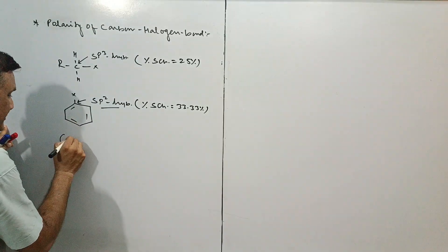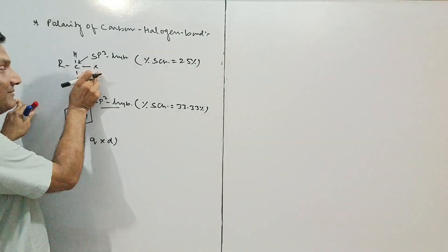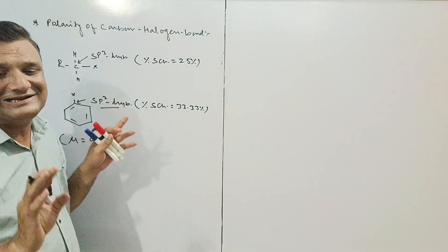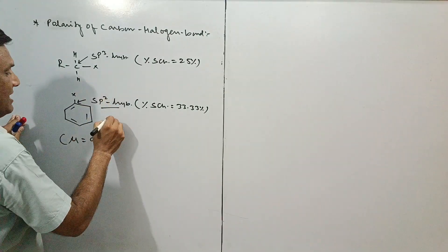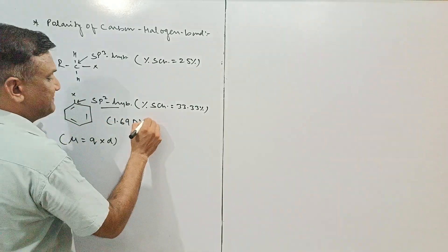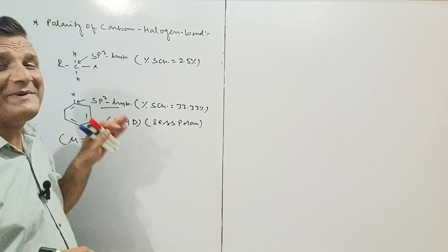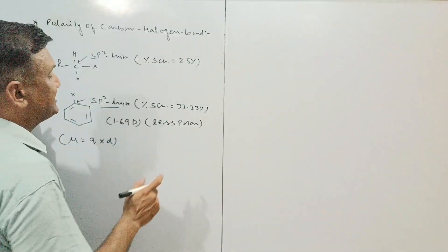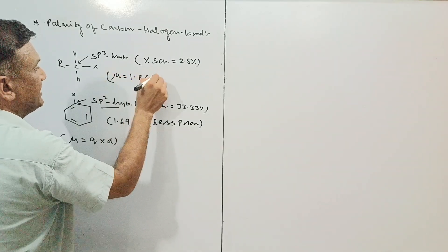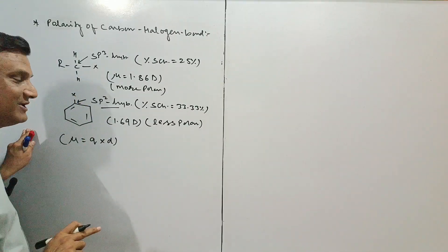Dipole moment ki value: mu = q × d. Yahan sp3 carbon ki electronegativity kam hai to bond length zyada hogi, d ki value badegi, isliye mu ki value bhi zyada hogi. Is sequence mein haloalkane ka dipole moment milta hai 1.69 Debye - that is less polar. Jabki haloarene ke liye mu ki value milti hai 1.86 Debye - that is more polar. Jyadha polar hone ke karan bond easy way mein dissociate hoga.